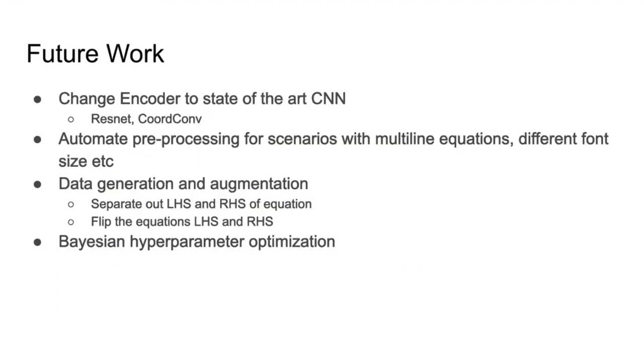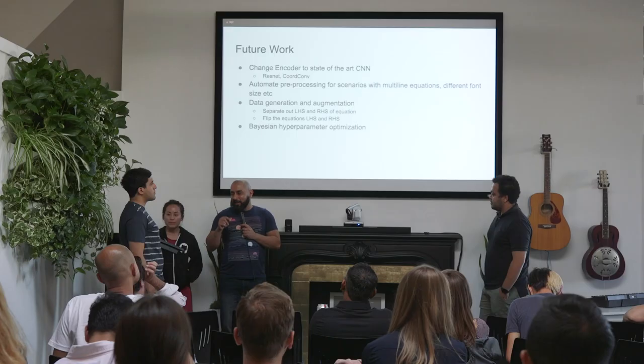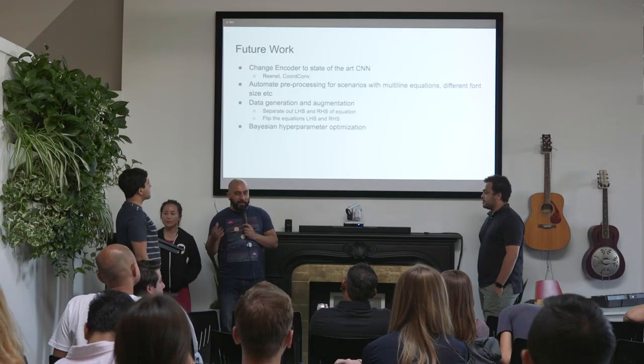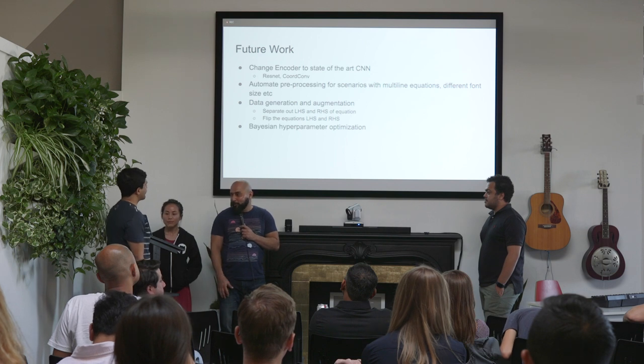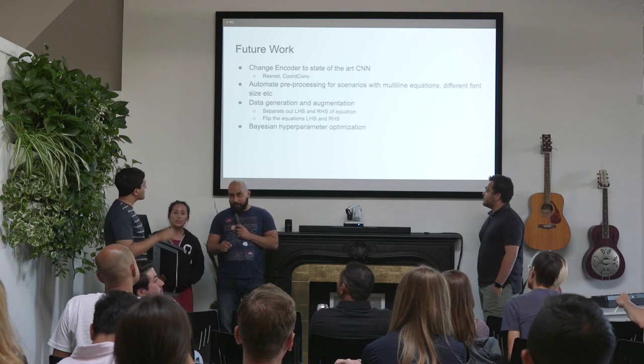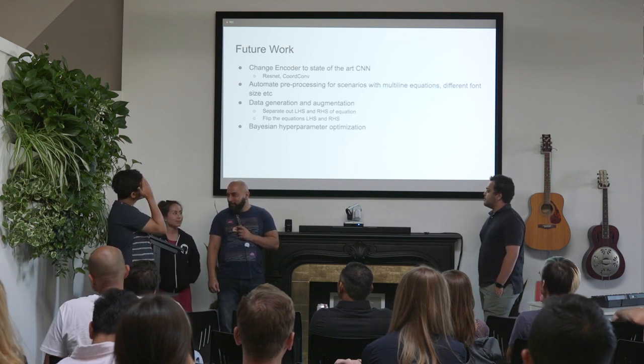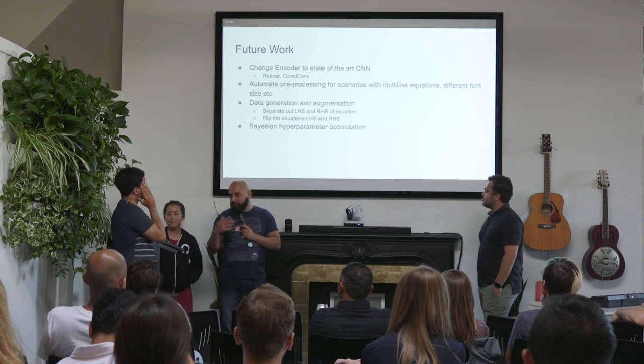For future work, what we could extend it to: well, one of them would be change the encoder, which is right now just CNN, to something that's more state-of-the-art. We would want to automate the pre-processing, so right now it only takes images where the equation is sort of centered. We would want to make it more generic than that, and I think that would be a pretty cool thing to be able to do. And then finally, there's just data generation and augmentation. We could just from the existing dataset make many more equations from there.